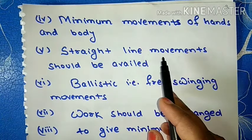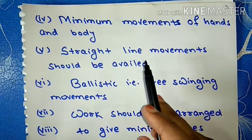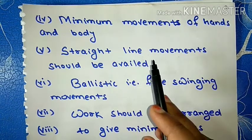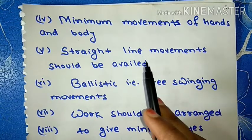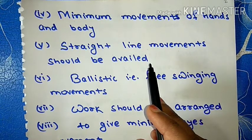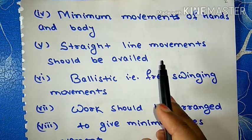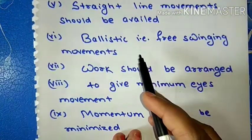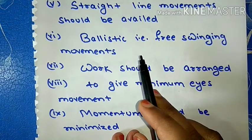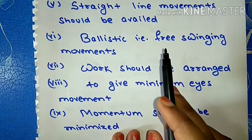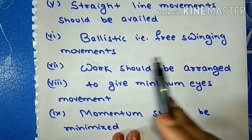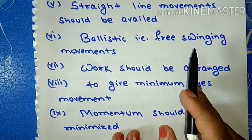Fifth point: straight line movements should be availed in preference of continuous curved movements. That is, always we should take advantage of straight line movement compared to continuous curved movements. Sixth point: ballistic, that is free swinging movements, should be preferred over controlled and restricted movements. That means, free swinging movements should be given priority over controlled movements.